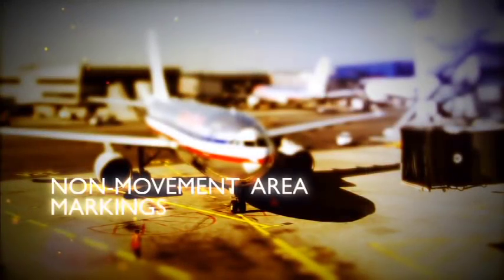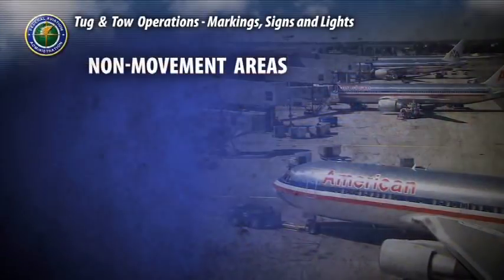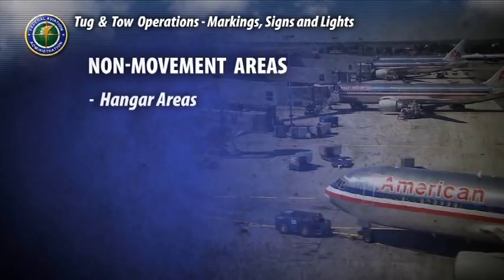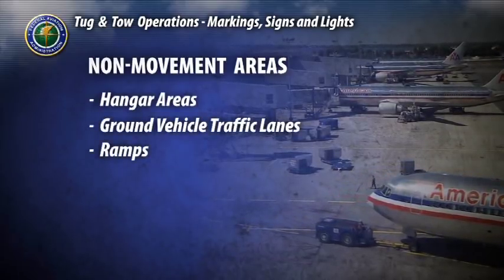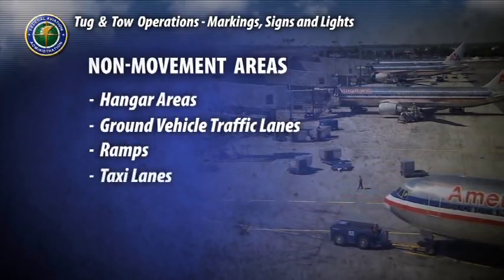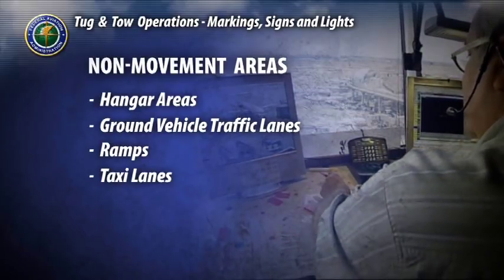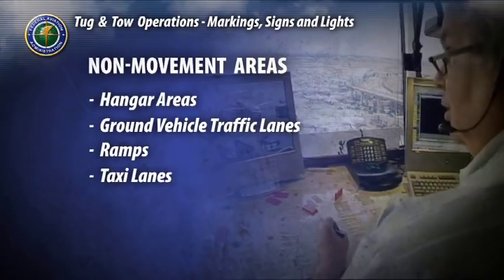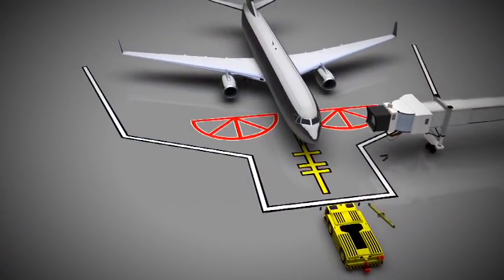This section addresses the markings you will encounter in a non-movement area. Non-movement areas at tower controlled airports include hangar areas, ground vehicle traffic lanes, and ramps. Taxi lanes may be considered movement or non-movement areas depending on their configuration at individual airports. We will identify the major markings within the ramp area.